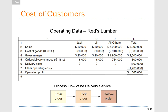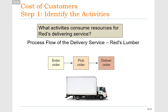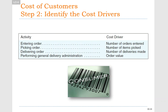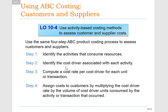As you might suspect, that measure of profitability will change when we implement activity-based costing to evaluate our customers. Step one: identify the activities. Our order process flow includes entering orders, picking orders, and delivering orders — three activities. Step two: identify a cost driver for each activity. For entering orders, it's the number of orders entered. For picking orders, it's the number of items picked. For delivering orders, it's the number of deliveries. We also have a catch-all for general administrative cost based on order value.